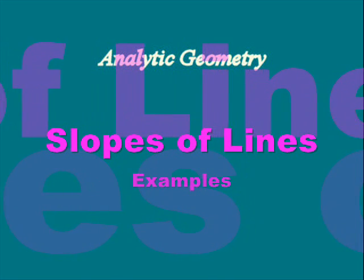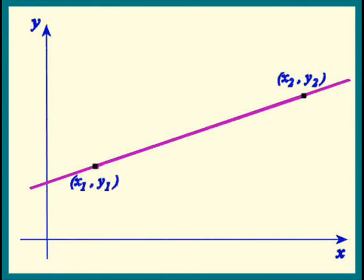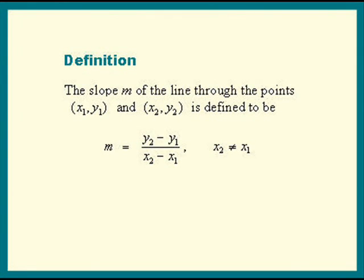Welcome to this lesson on finding slopes of lines. We all know that two different points determine a unique line. And here's the formula for finding the slope of this line. The slope is defined to be the change in the y's over the change in the x's.